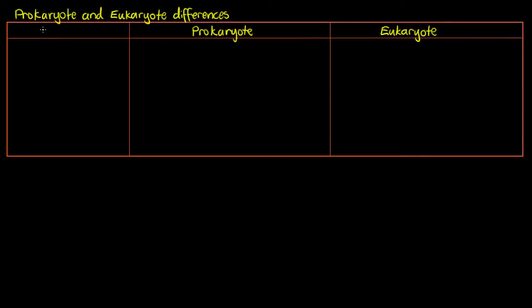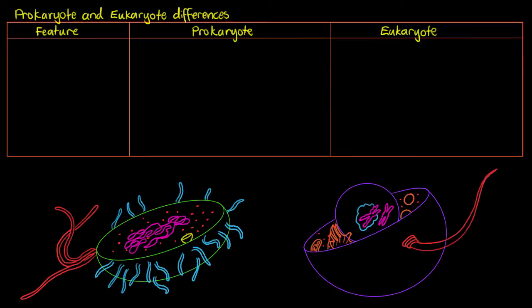If we're going to look at a few of the features, it will probably help if I have a drawing up here of both types of cells. So we have our prokaryotic cell right here and our eukaryotic cell right next to it. We can already see they look very, very different to each other without even talking about exactly what those differences are yet.